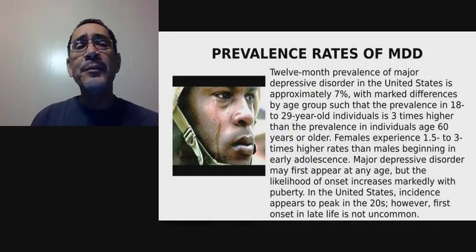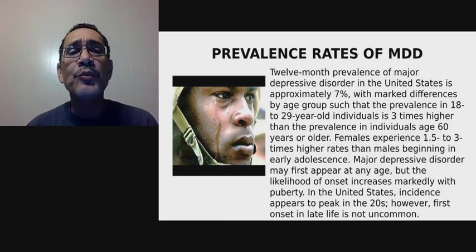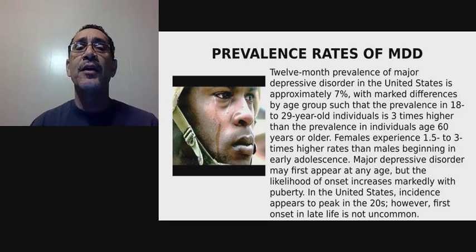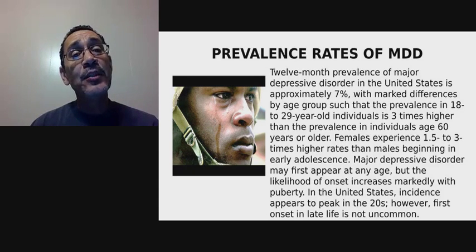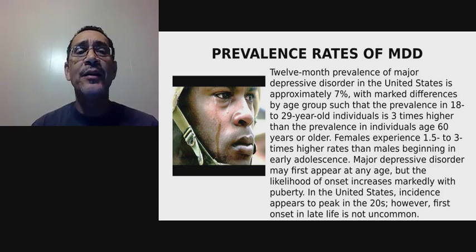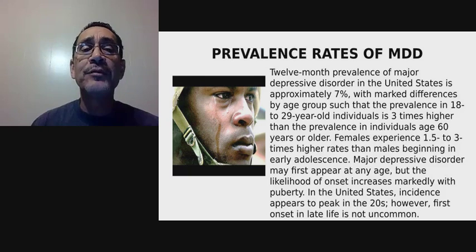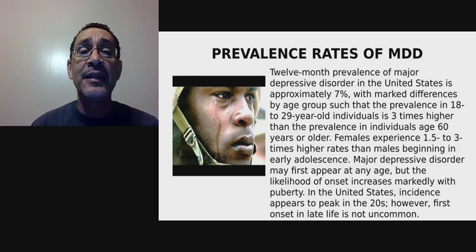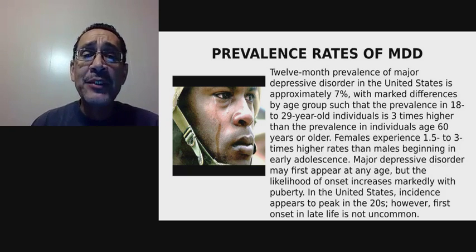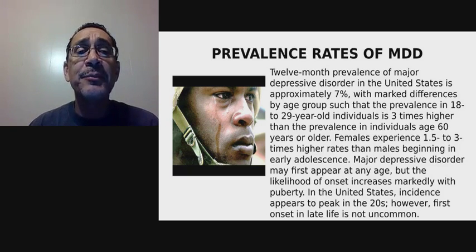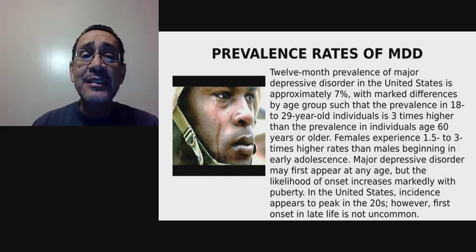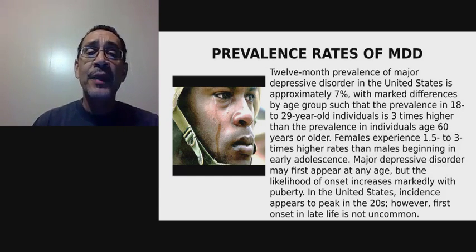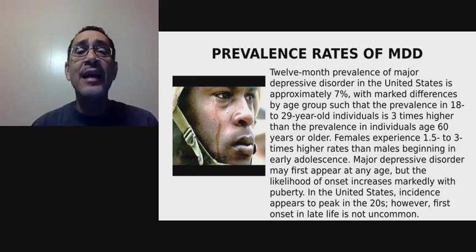The 12-month prevalence of major depressive disorder in the United States is approximately 7%, with marked differences by age group. The prevalence in 18-to-29-year-old individuals is three times higher than in individuals aged 60 or older. Females experience 1.5 to 3 times higher rates than males, beginning in early adolescence. MDD may first appear at any age, but likelihood of onset increases markedly with puberty, and incidence in the United States appears to peak in the 20s, though first onset in late life is not uncommon.